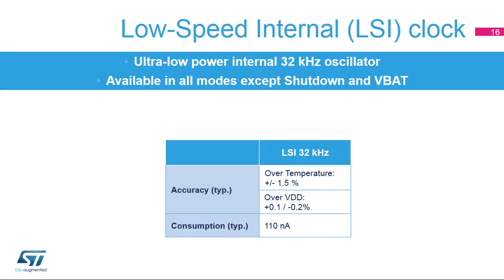STM32L4 devices embed an ultra-low-power 32 kHz RC oscillator, which is available in all modes except shutdown and VBAT. The LSI can be used to clock the RTC, the LCD, the low-power timers, and the independent watchdog. The accuracy of the LSI is plus or minus 1.5% over temperature and +0.1/-0.2% over voltage.